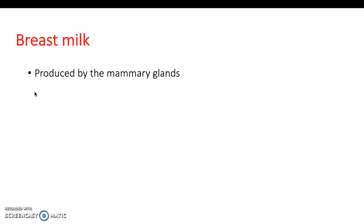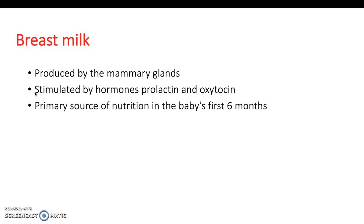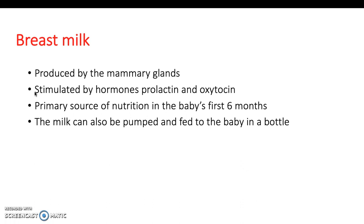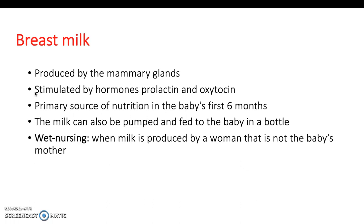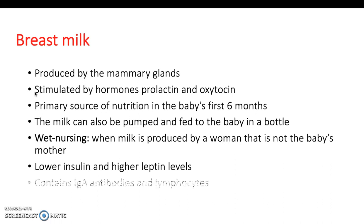So, what is breast milk? It's produced by the mammary glands, stimulated by the hormones prolactin and oxytocin. It's the primary source of nutrition in the baby's first six months, after which the baby is weaned onto soft foods. The milk can also be pumped and fed to the baby in a bottle. Wet nursing is when milk is produced by a woman who is not the baby's mother, and it can be formal or through a milk bank. Breast milk has lower insulin and higher leptin levels compared to formula milk, contains loads of IgA antibodies and lymphocytes which stay high until around seven months, and also contains around 600 different species of bacteria — making it essential for building up the baby's immune system.